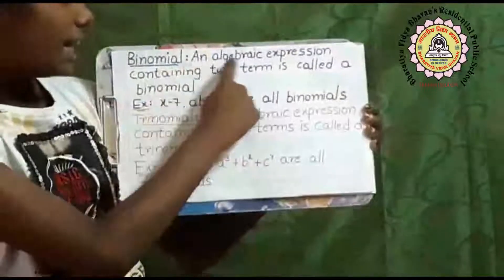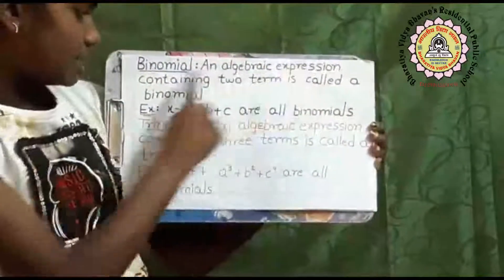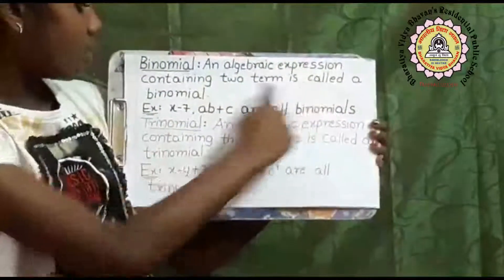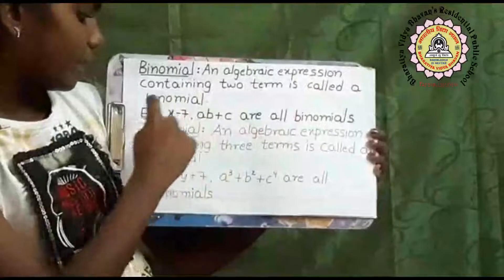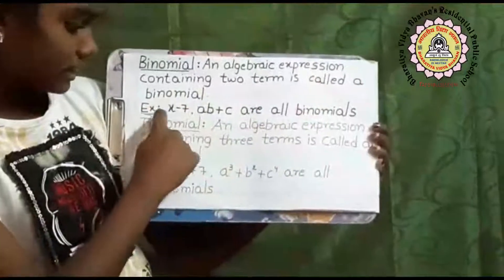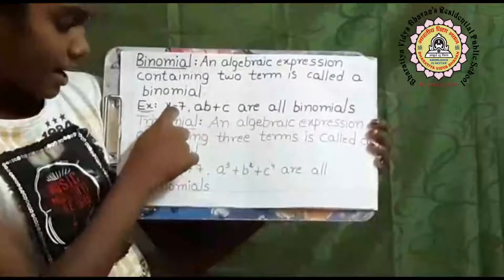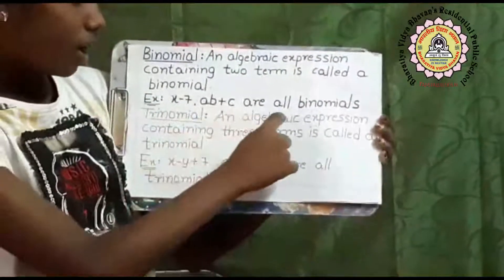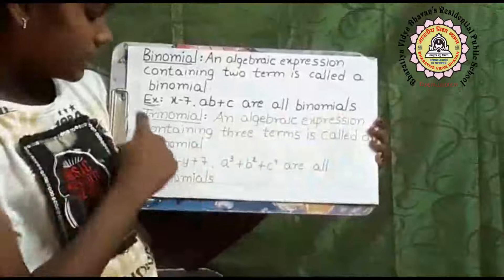Binomial: an algebraic expression containing two terms is called a binomial. Examples are: x minus 7, a plus b, b plus c are all binomials.